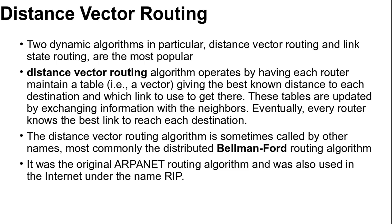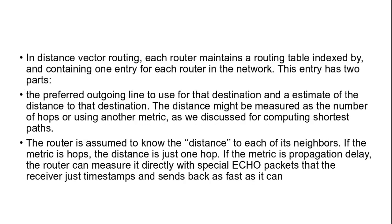In Distance Vector Routing, each router maintains a routing table indexed by and containing one entry for each router in the network. This entry has two parts. The preferred outgoing line to use for that destination and estimate of the distance to that destination. And the distance might be measured as the number of hops or using another metric.